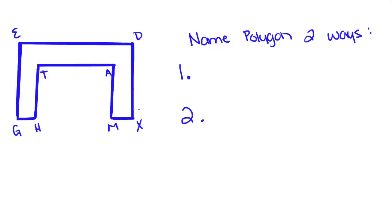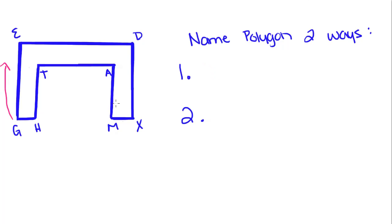So we have this polygon, and we're going to name it two different ways. First, we're going to go clockwise, starting with G. And we're going to go G, E, D, X, M, A, T, H.